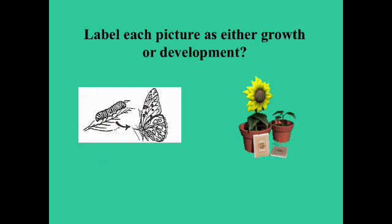Here's a little impromptu quiz. Looking at this picture on the left — is this growth or development? If you said development, you're absolutely correct. Why is it development? A caterpillar crawls on the ground and eats leaves. Then it goes into a cocoon, and a couple weeks later it pops out having the ability to fly. It developed in that cocoon the ability to fly. It didn't just grow — that would just mean we have a bigger caterpillar.